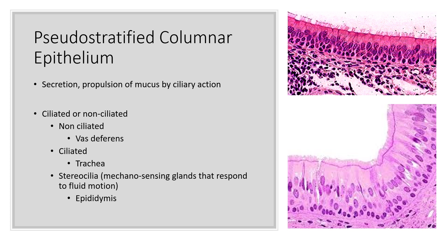Pseudostratified columnar epithelium functions in secretion or propulsion of mucus by ciliary action. The cells are shaped and positioned in such a way that they look like several layers of columnar cells, but they're not actually several layers — just a single layer positioned and shaped to appear as such. There are ciliated and non-ciliated types. Non-ciliated is found in the vas deferens, and ciliated can be found in the trachea.